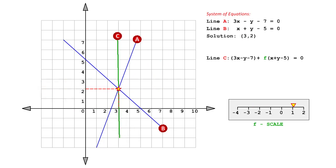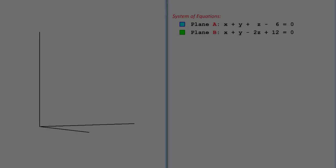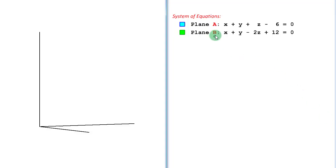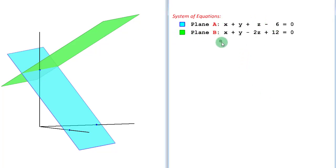We are going to use the same technique of linear combination in three dimensions now. So let us start with a pair of linear equations in three variables x, y and z. If we plot these equations, they turn out to be planes. Equation A becomes this blue plane and equation B is the green plane.